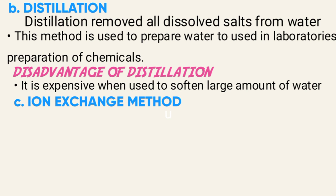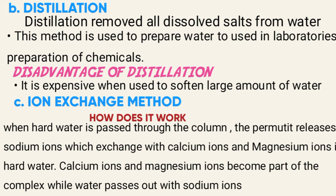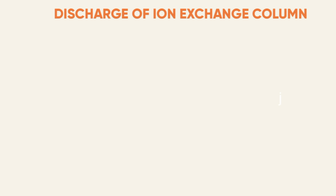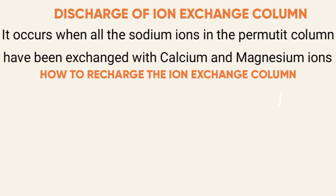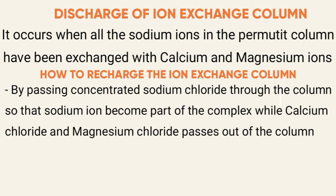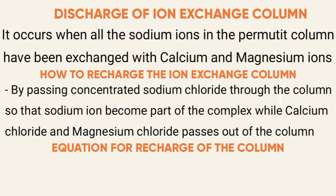Ion exchange: when water is passed through the ion exchange resin, the resin releases sodium ions, which exchange with calcium ions and magnesium ions in hard water. Calcium ions and magnesium ions become part of the resin complex while water passes out with sodium ions. The resin is exhausted when all the sodium ions have been removed. Regeneration of the column is done by passing concentrated sodium chloride through it, so that calcium and magnesium ions are displaced while calcium chloride and magnesium chloride pass out of the column. The equation for regeneration is shown below.